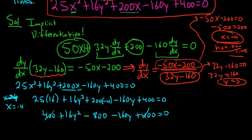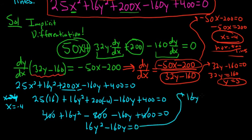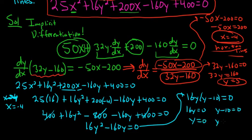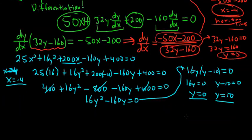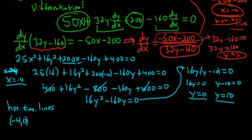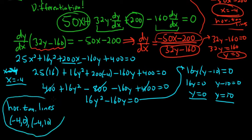The 400s and negative 800 cancel nicely, leaving 16y² minus 160y equals 0. We can factor out 16y to get 16y(y minus 10) equals 0. Setting each factor to zero gives y equals 0 and y equals 10. So when x is negative 4 we have two y values — the horizontal tangent lines occur at (−4, 0) and (−4, 10).